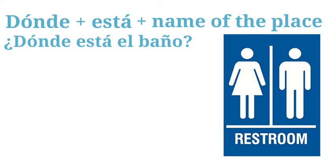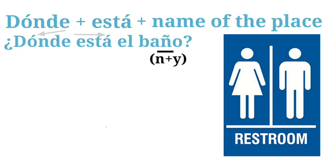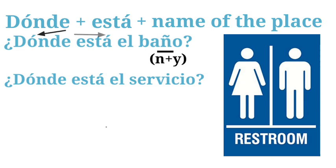For example: 'dónde está el baño.' The accent mark on top of the 'o' means we put more stress there — it's 'dónde,' not 'donde.' Similarly 'está' has an accent on the 'a.' The 'ñ' in 'baño' is a mix of the 'n' and 'y' sounds. You can also say 'dónde está el servicio' — both 'servicio' and 'baño' mean bathroom.